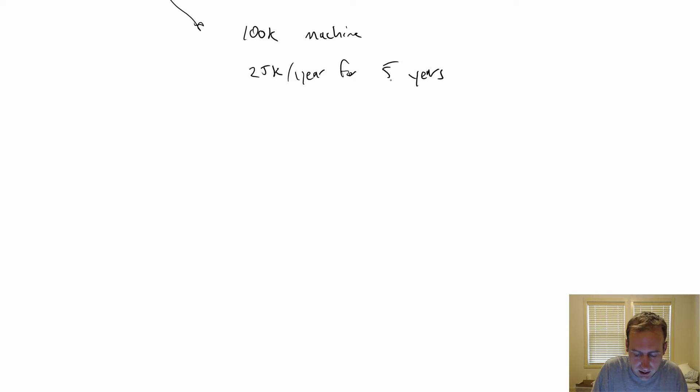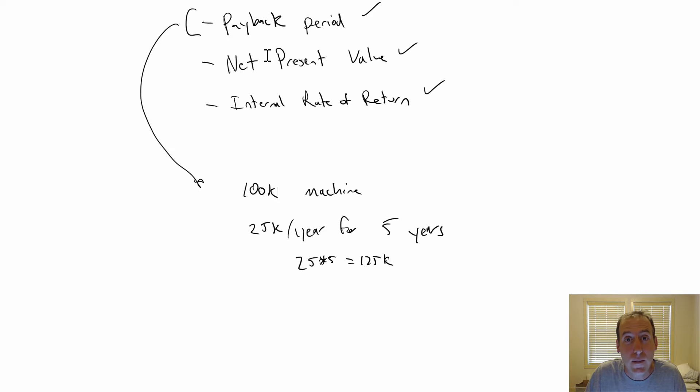You can look at that and say it's a $100,000 machine, $25,000 a year for five years, 25 times 5, that's $125,000. You might say this is fantastic, it's making me $25,000, I should do it. But not so fast because of the time value of money and the fact that we're tying up $100,000 of our money. We could invest it elsewhere, we could do something else with that money. It might not be a good decision, and that's what net present value calculations get at.